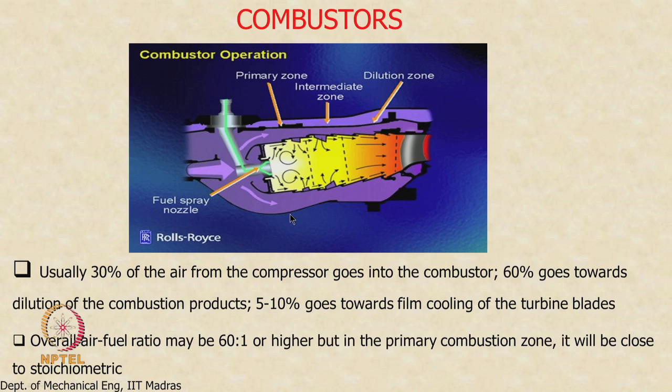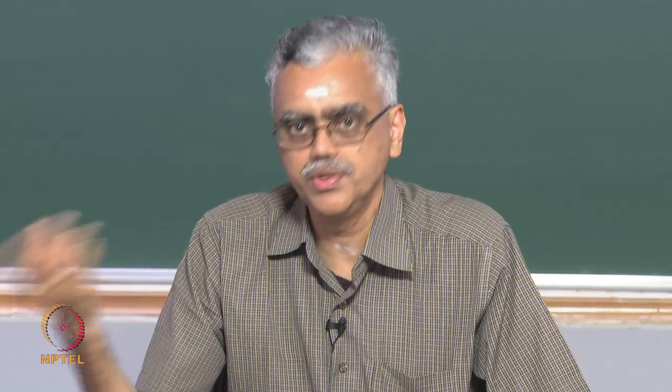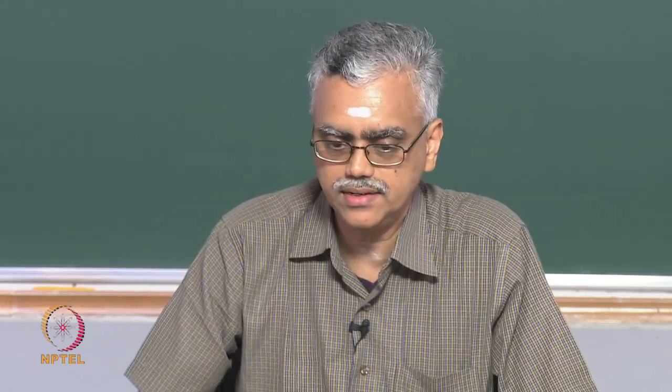The combustor is exposed to the highest possible pressure in the cycle, as air enters from the high pressure compressor — so it sees both the highest pressure and highest temperature. However, it is not a rotating component, so stresses are primarily thermal: exposure to high temperature causing metallurgical issues and thermal stress, with no mechanical stresses. We must take this into account when selecting materials for combustor components.